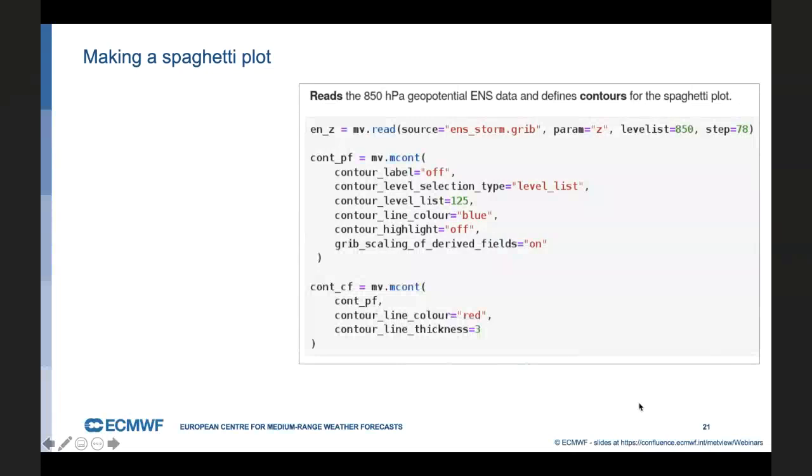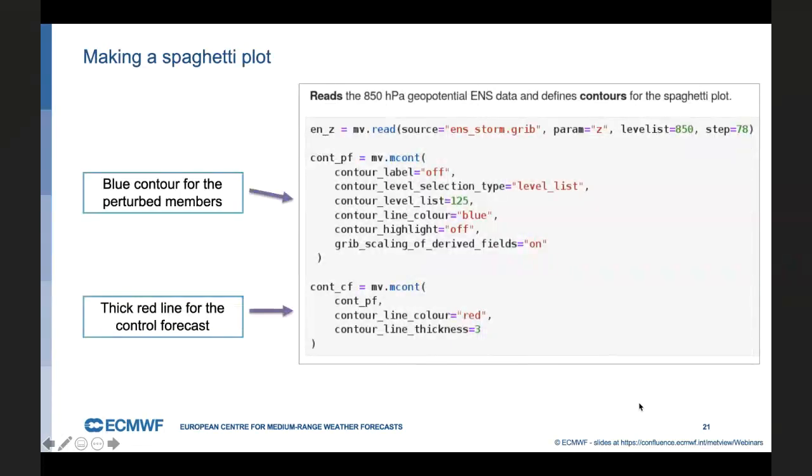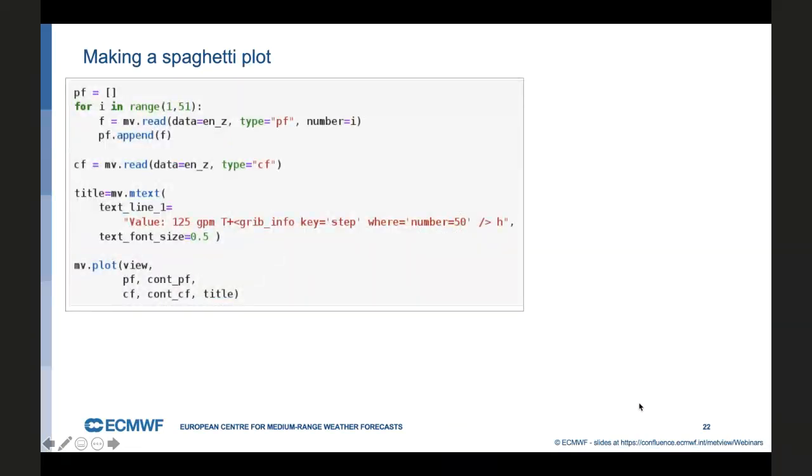So we start with reading the data in. This time, it's geopotential on 850 hectopascals. We store it in fieldset EN_Z. Then we define two contour line definitions. We use blue contours for the perturbed members. And here, you can notice that in the contour level list, we have one single value, 125, which is the spaghetti value we want to look at. And we define another contour definition for the control forecast. We want to highlight it with a thick red line in the plot.